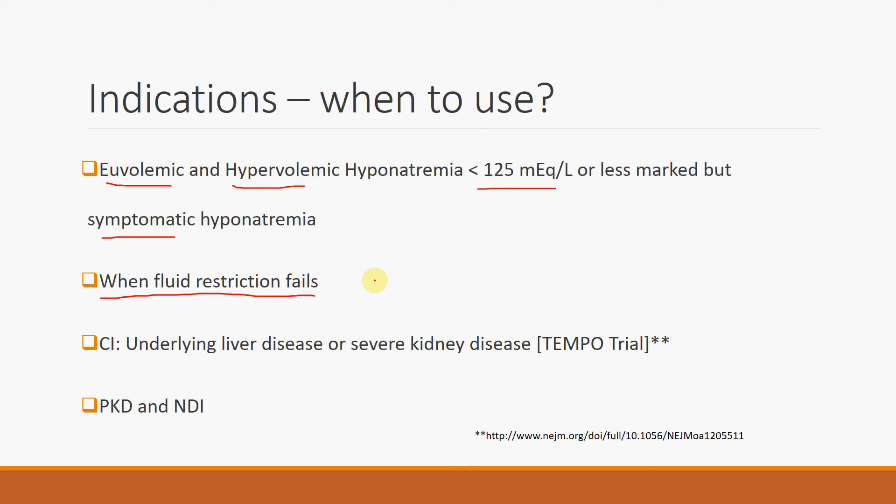In addition, we may use this drug when fluid restriction measures fail. It's important to know that this drug is contraindicated in patients with underlying liver disease or severe kidney disease. So based on the TEMPO trial, we saw that patients who had underlying liver disease and used Vaptans had their AST and ALT levels increased by almost two to threefold, creating almost like a drug-induced hepatitis.